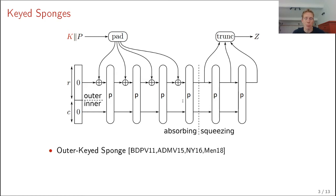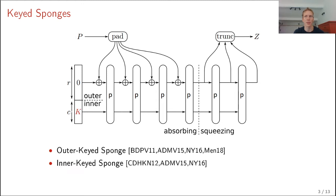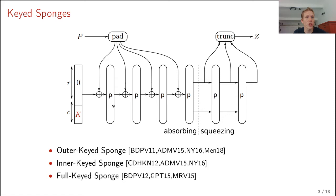You can also use the sponge for keyed applications, for constructing a PRF. The simplest way is by simply concatenating the key and the plaintext and evaluating the hash function on top — this is known as the outer keyed sponge, and it's a secure PRF. Alternatively, you can place the key in the inner part of the state, which is known as the inner keyed sponge. Once you do so, the state becomes secret, and there is no need to maintain an inner part anymore, so you can do full-state absorption — this is known as the full keyed sponge.